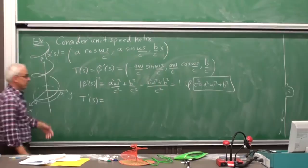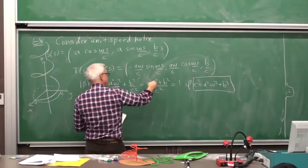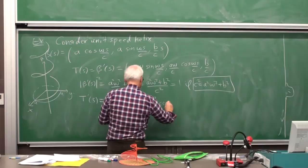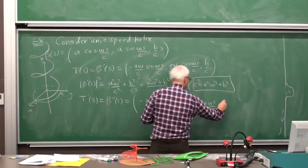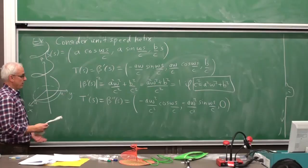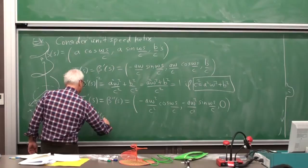Okay, what do we do next? Well, we differentiate this. So T prime of S, we have to differentiate again with respect to S. So that's the same as beta double prime of S acceleration. Well, we get another W over C coming out front. So we have minus A W squared over C squared now times cosine W S over C, and minus A W squared over C squared times sine of W S over C, and then the third component is now zero. This is then the acceleration.